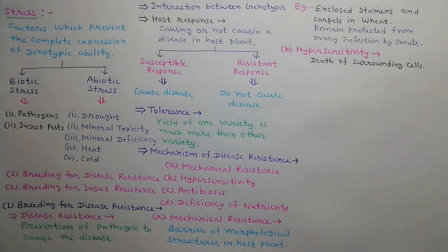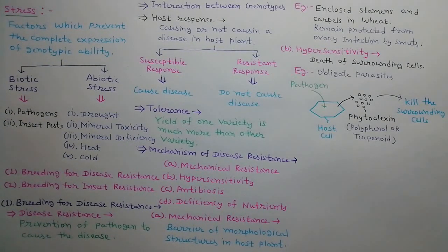Second mechanism is hypersensitivity. When a pathogen infects a host cell, death of surrounding cells occurs to prevent further infection. This is called hypersensitivity. This occurs in case of obligate parasites. When a pathogen infects a host cell, this cell produces phytoalexin, which is a polyphenol or terpenoid. This phytoalexin kills the surrounding cells to prevent further infection.